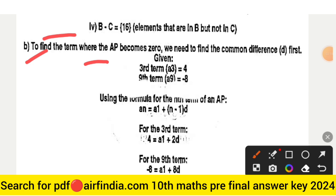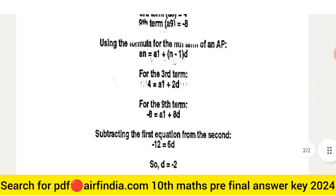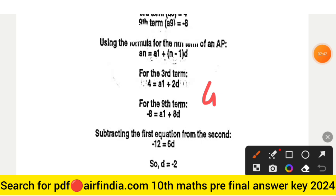Question 29B: To find the term where the AP becomes zero, we need to find the common difference. Given: third term = 4 and ninth term = -8. Using the formula for the nth term of an AP: aₙ = a₁ + (n-1)d. For the third term: 4 = a₁ + 2d.